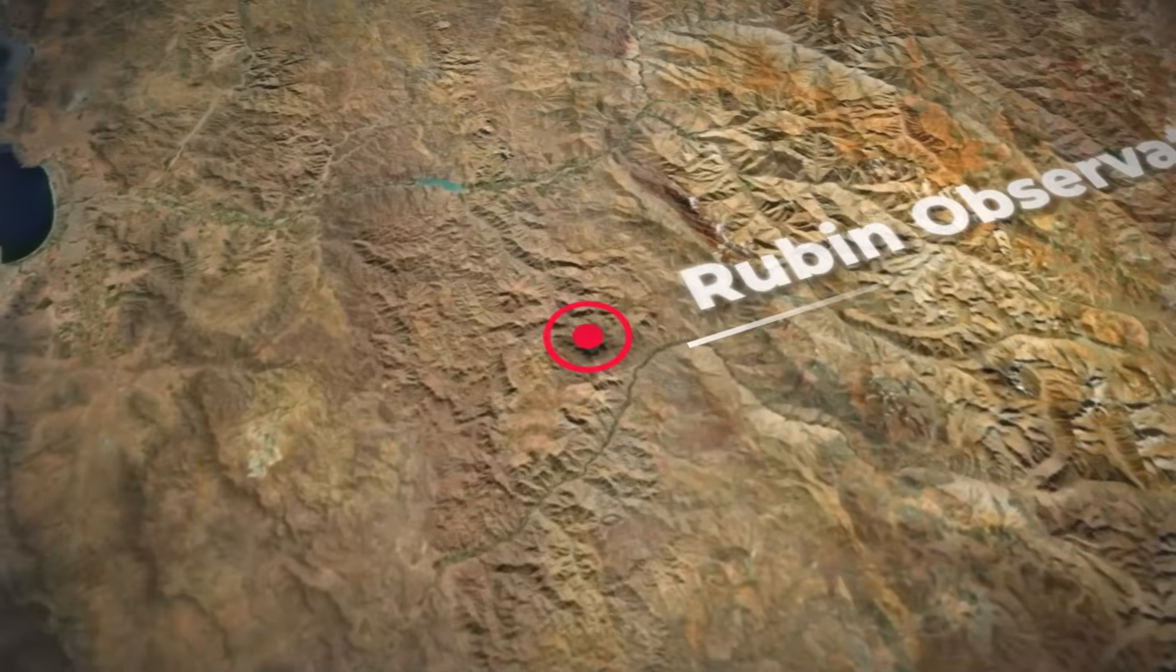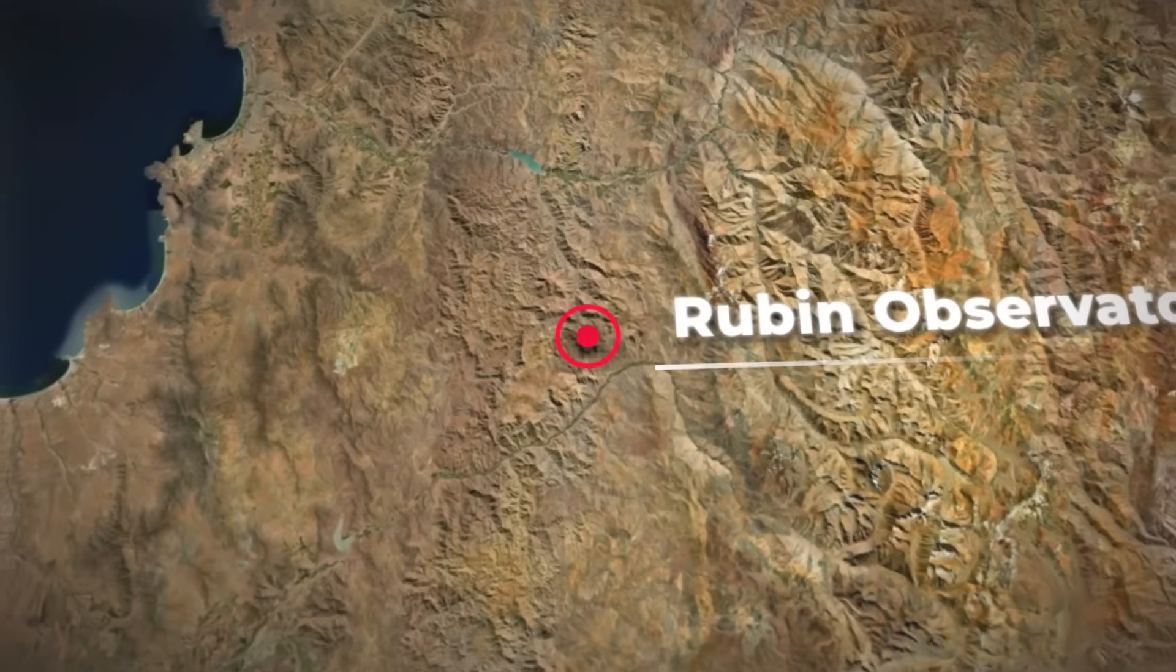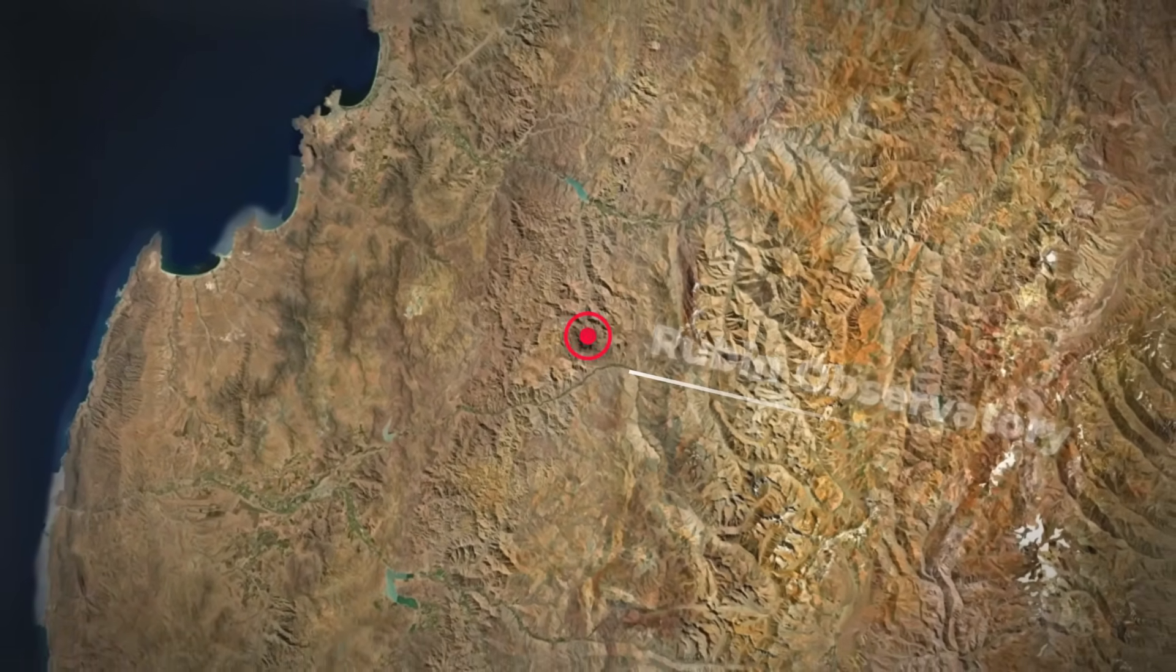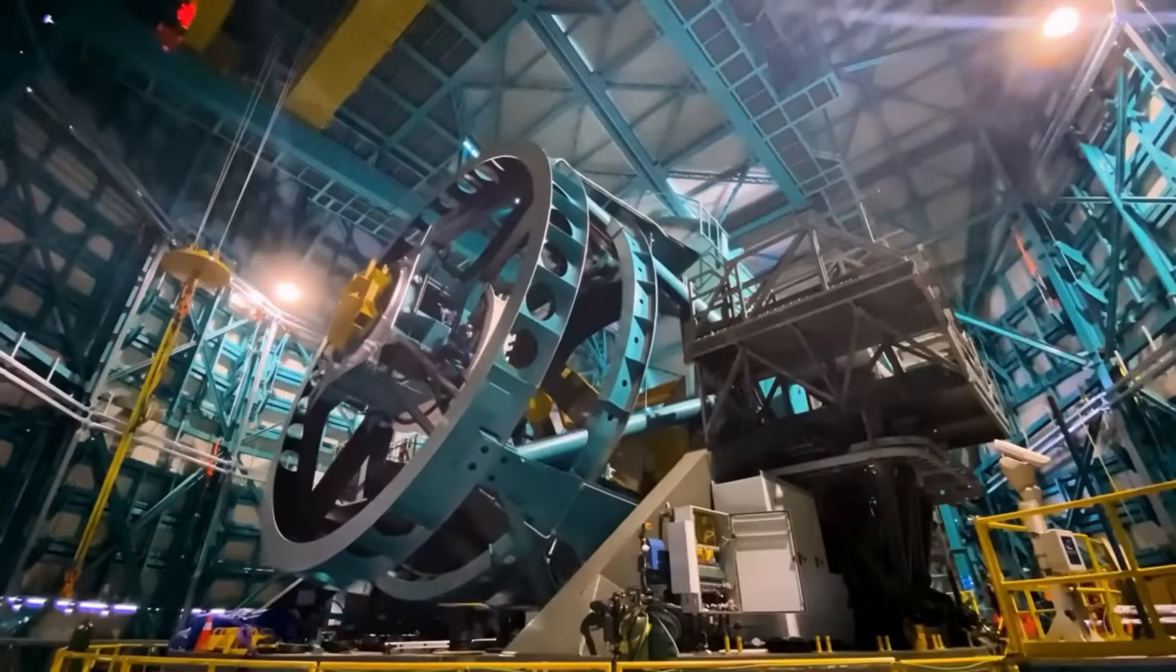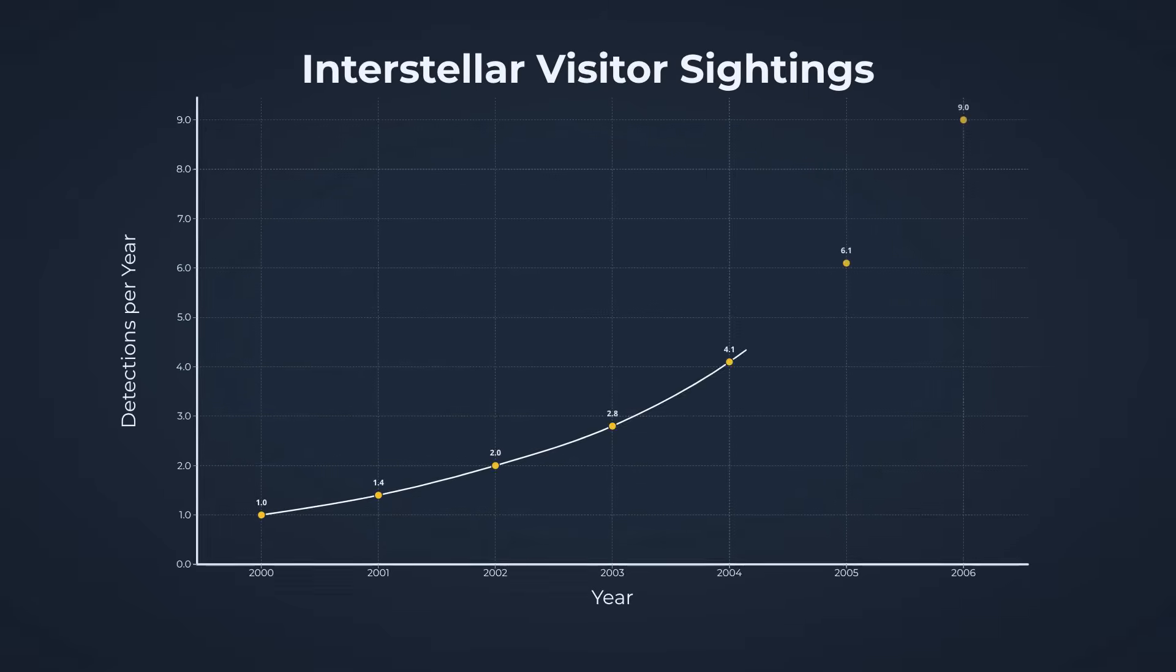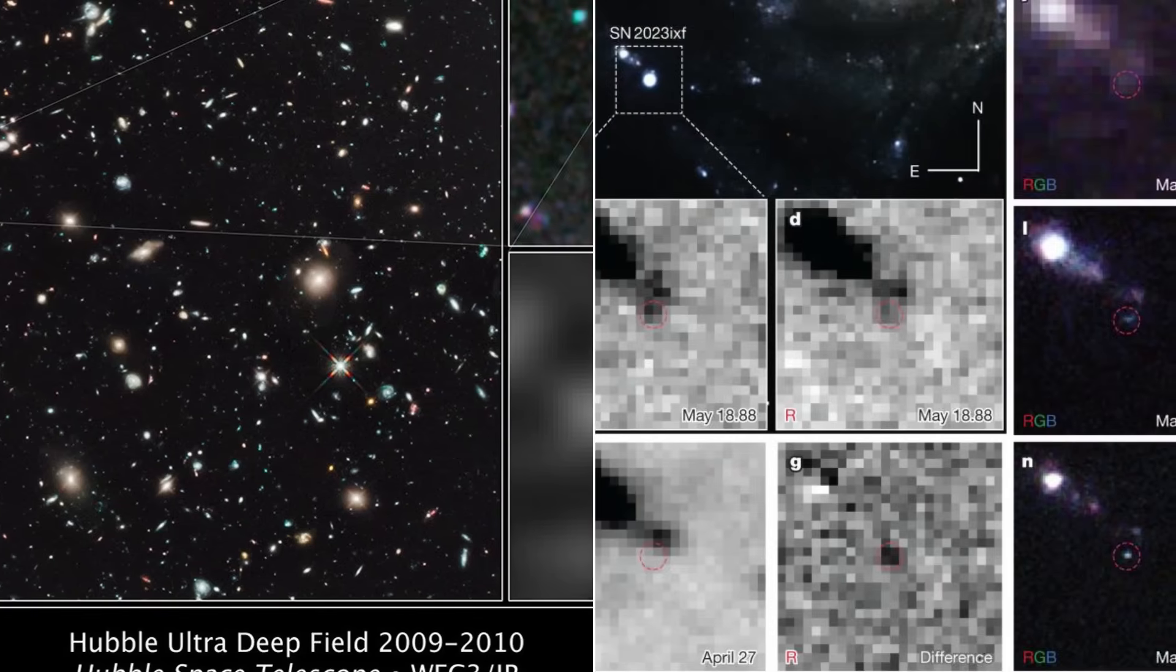The next chapter in planetary defense is unfolding at the Vera C. Rubin Observatory, perched atop Cerro Pacón in Chile. When full operations begin, Rubin's sweeping surveys will scan the entire visible sky every few nights. Simulations predict a new interstellar object could be flagged every few months to a year, an order of magnitude leap from the era when spotting even one in a decade seemed remarkable.